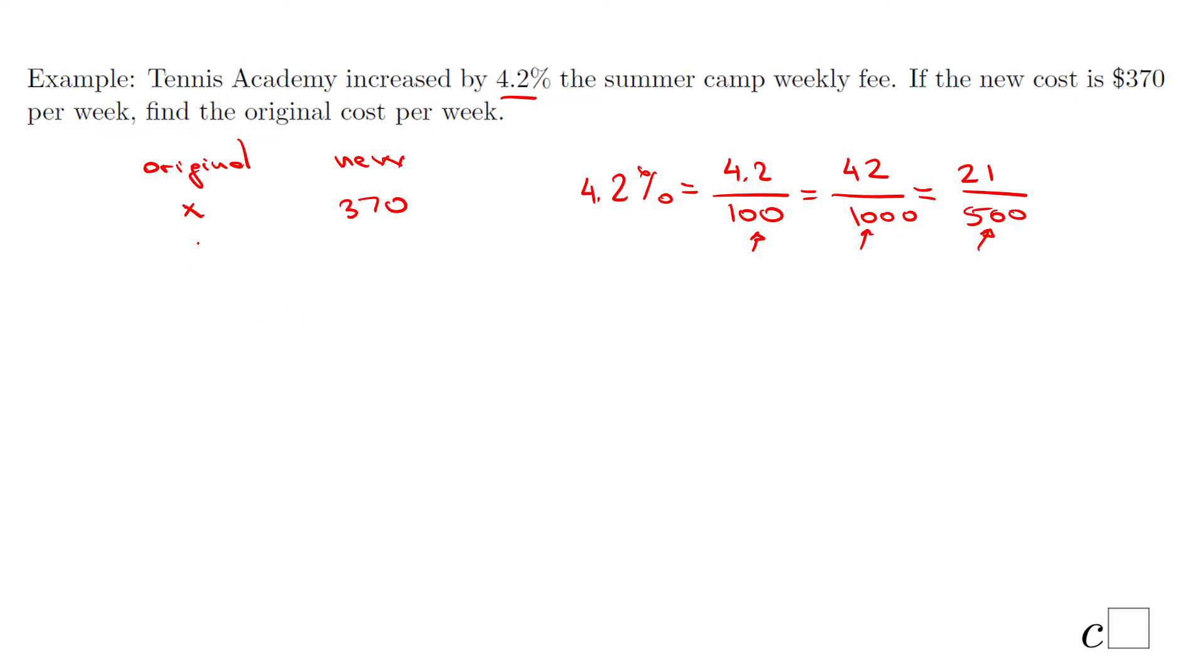Either one will work fine. For my next step, I'm going to choose the last one. My next step will be to write and use this formula we used here: new minus original over original. In this case, this becomes 370 minus x over x. This quotient here, this ratio, is nothing else than one of these three. So I'm going to go with the last one: 21 over 500. And how I find x here? Cross multiply.